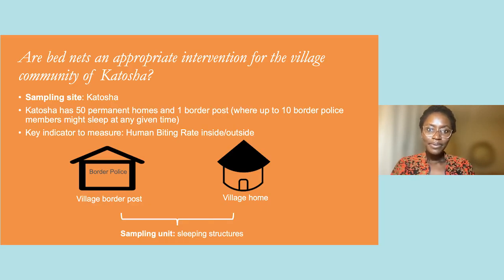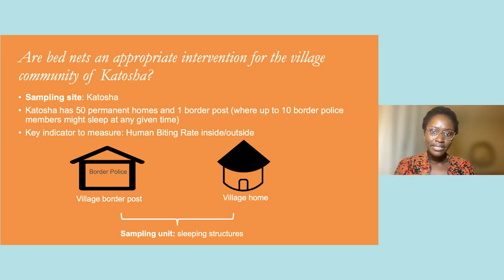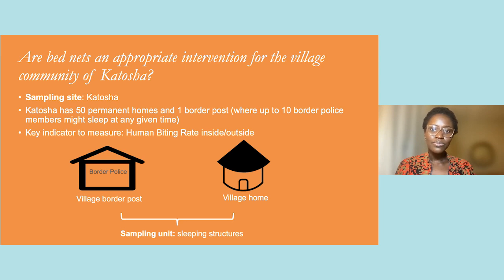Now let's apply this logic to our example. We want to answer the question: are bed nets an appropriate intervention for the village community of Katosha? Our sampling site is the village community of Katosha. We know that Katosha has 50 homes and one border post that can have 10 members of the border police asleep at the same time. Since humans sleep in both houses and at the border post, it would be advisable to include both in our sampling plan. Recall that one of our key indicators from Module 2 is the human biting rate inside and outside. Therefore, our sampling unit will be sleeping structures, inclusive of both the permanent homes and the border post in Katosha.